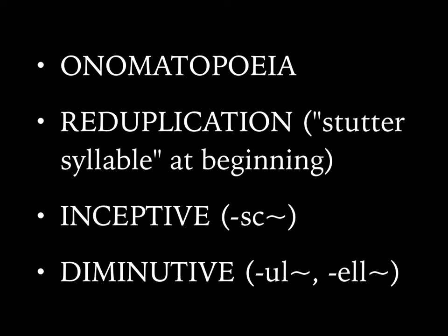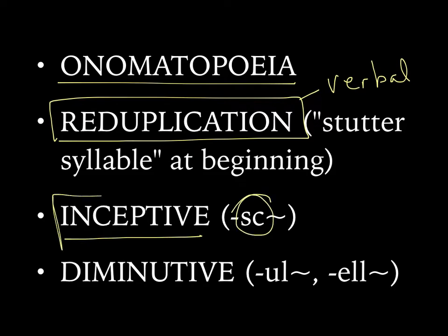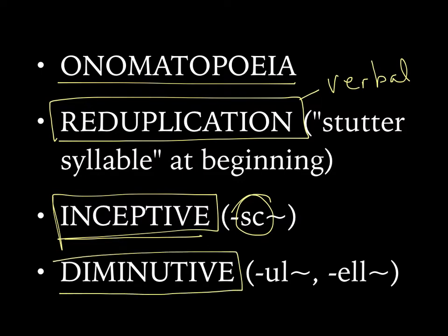So if I ask what's cool about something, I'm usually looking for one of these four answers: onomatopoeia, which is when a word sounds like what it means; reduplication, which is a very complicated linguistic aspect with a lot of different facets — I focus on a verbal aspect that is a holdover from ancient Greek; inceptive, which will always have the letters SC and shows the process of something happening rather than it being completed; and diminutive, which means something is small or cute or dainty, and will often have either the letters UL or ELL. In the next few slides I'm going to show you some examples and give you some tips on how to recognize them.